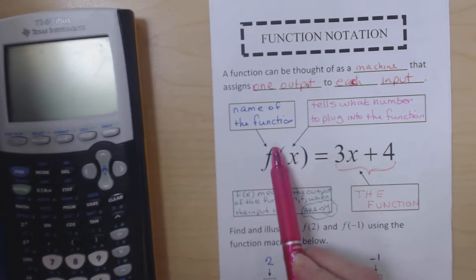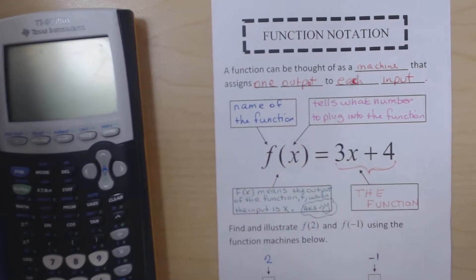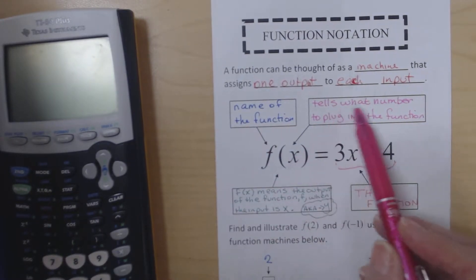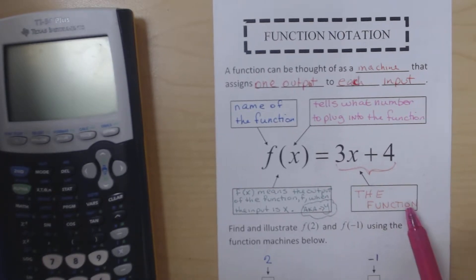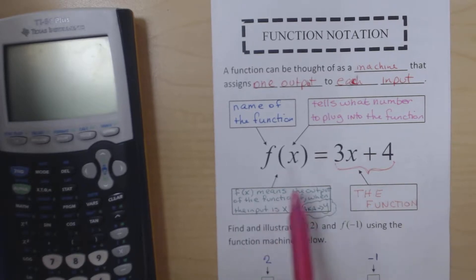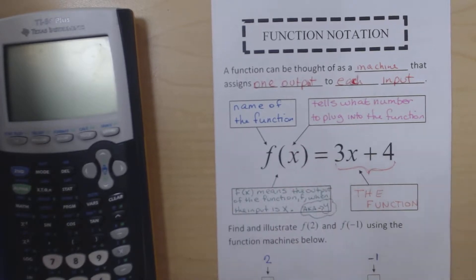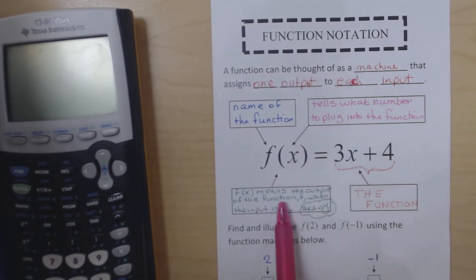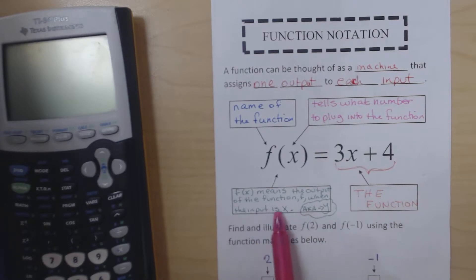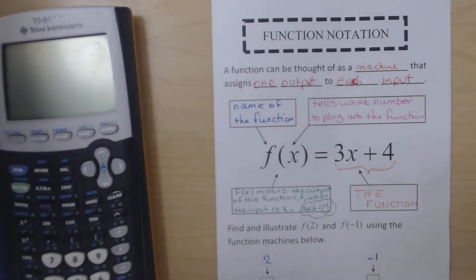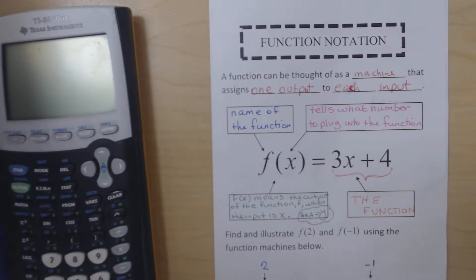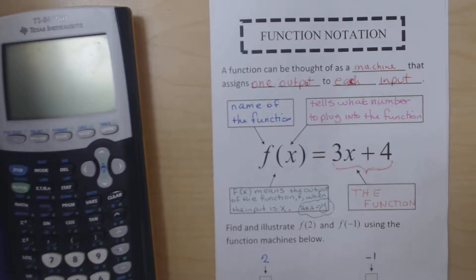Here we have the function f(x) equals 3x plus 4. The f itself is the name of the function. The x tells what number to plug into the function. The 3x plus 4 is the actual function itself, and f(x) means the output when the input is x. We also call this y. You might want to pause several times to make sure you have everything written down.